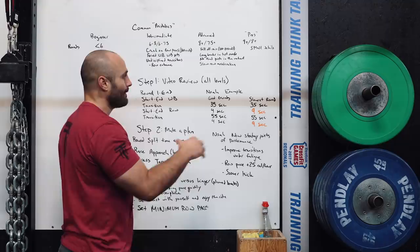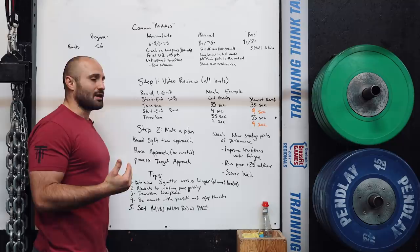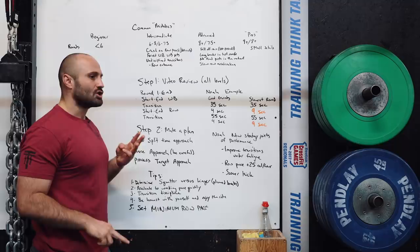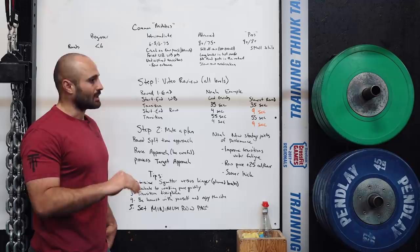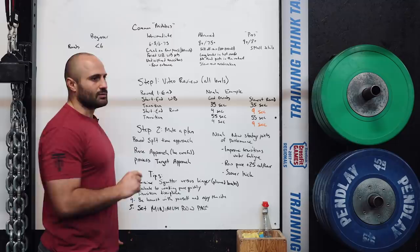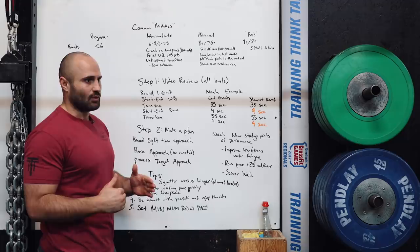After video review, you make a plan. The first thing is to figure out how you want to psychologically and mentally approach a workout. I think there are three major ways. The first is a round split time approach. In the open you have your own clock and your own judge-counter to help you stay on track. So you can go in knowing exactly how long your rounds need to be, and treat this workout like an interval workout rather than just rushing. It can relieve some competitive pressure and allow you to just work.